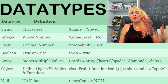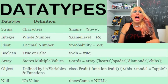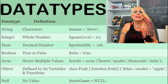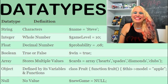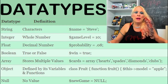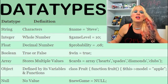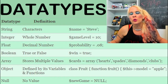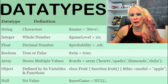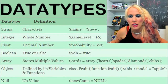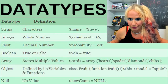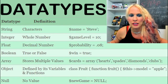We're not going to get to the last three data types today. I want to go over things like operations and conditionals before we do those. But I wanted to give you the definitions. Array stores multiple values. My example is dollar sign cards equals array of hearts, spades, diamonds, and clubs.